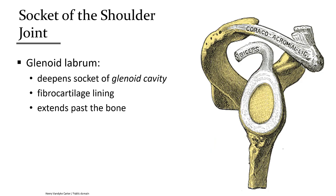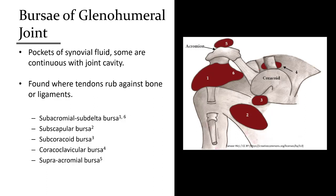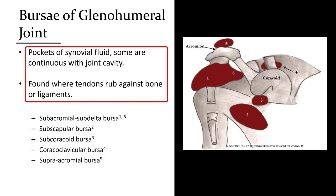The shallow glenoid fossa is made up to 50% deeper by a thickened fibrocartilage rim called the labrum, cupping the head of the humerus and making the joint much more stable. The long head of the biceps brachii attaches at the superior region of the glenoid fossa and the tendon end is actually fused with the labrum. Several ligaments contribute to stability, but muscle strength is the greatest protection against dislocation given this joint's wide range of motion and little bony stability. Several bursa protect the many tendons and ligaments that traverse this complex joint.